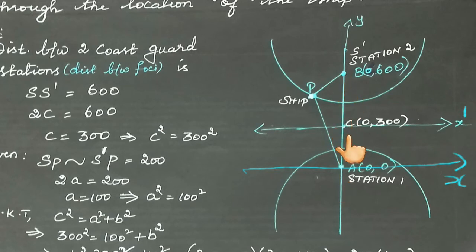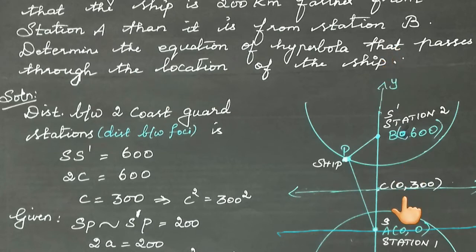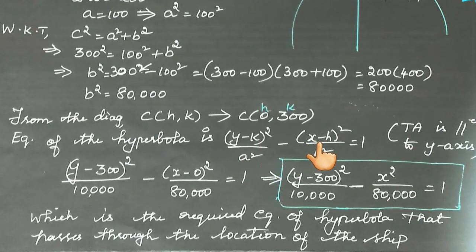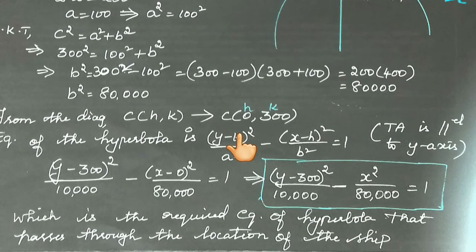Now let us derive the equation of the hyperbola. The formula for a hyperbola with transverse axis parallel to the y-axis is: (y - k)²/a² - (x - h)²/b² = 1. Since the transverse axis is parallel to the y-axis, we use this form. We have already obtained h = 0 and k = 300 from the diagram.